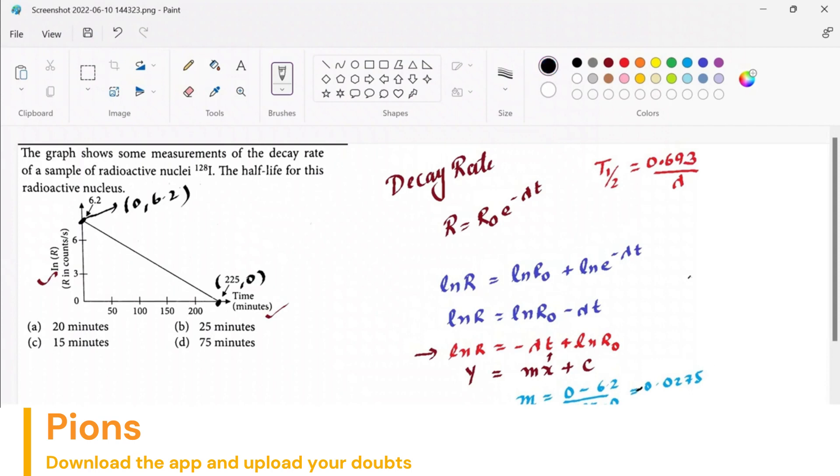So λ equals 0.0275. Let's substitute this to get the value of T_half, the half-life: 0.693 divided by 0.0275.